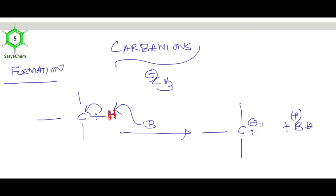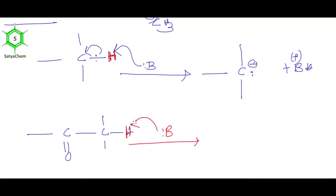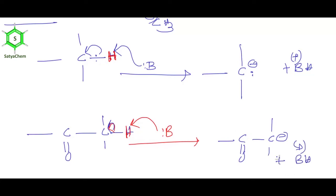When a base abstracts the alpha hydrogen adjacent to a carbonyl group, the bonded electron pair moves to carbon and we get a carbanion. This is the formation of a carbanion. The carbonyl group withdraws electron density, making hydrogen more delta positive. The base abstracts H+, the electron pair moves to the alpha carbon, and the carbanion is formed.